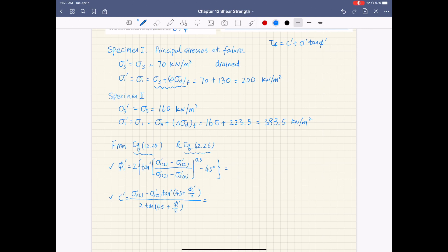this friction angle is called phi 1 prime because this is the over-consolidation portion of that Mohr-Coulomb failure envelope. So phi 1 prime.